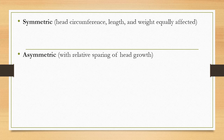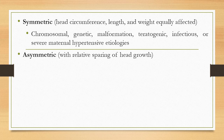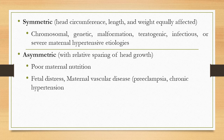IUGR babies can be symmetric or asymmetric. In symmetric IUGR, head size, length, and weight are equally affected, indicating growth restriction starting early in pregnancy — caused by chromosomal, genetic, or malformation reasons, teratogens, infections, or severe maternal hypertension. In asymmetric IUGR, the head is relatively spared, occurring later in pregnancy due to maternal malnutrition, fetal distress, or preeclampsia. We can assess this by calculating the Ponderal Index.